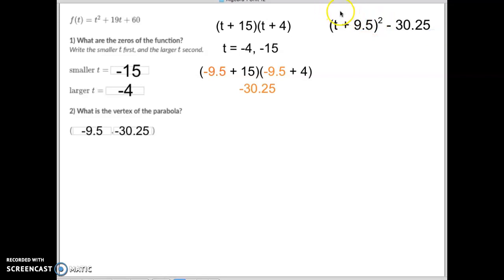Again this is now in vertex form, so it's the opposite of this, or negative 9.5, and this number are your vertex. Either one works, but I would recommend you go with this one and you'll see why in the next problem I give you now.